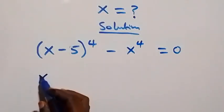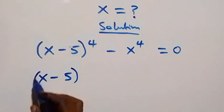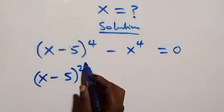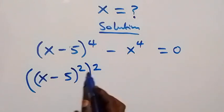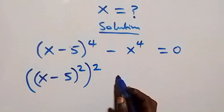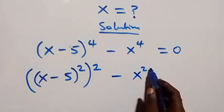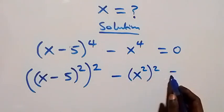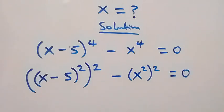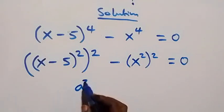From here we can rewrite this as x minus 5 squared, then squared again — since this power multiplied 2 times 2 is still 4 — then minus x squared, then squared again, equals to 0. From here we apply the difference of two squares.